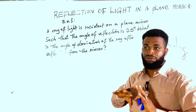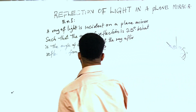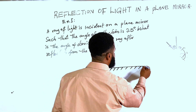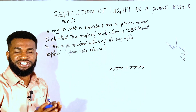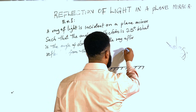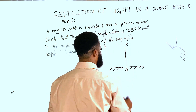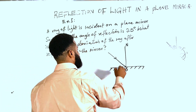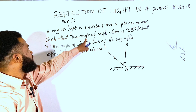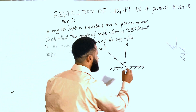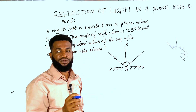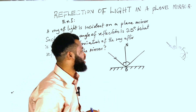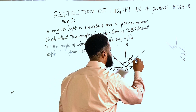We are going to set this up in a diagram. This is the mirror, and I draw the normal N at the origin. There must be an incident ray. I know the angle of reflection is 25 degrees. According to the principle of a plane mirror, the reflected angle equals the incident angle, so the incident angle is also 25 degrees.